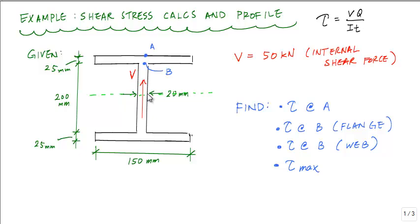In this video, we're going to do some detailed shear stress calculations and get a good feel for what the shear stress formula looks like and how it's applied for a given cross section. We've got an I-beam with an internal shear force of 50 kilonewtons, pointing upwards on the cross section. We want to calculate the shear stress at point A, the shear stress at point B just in the flange, the shear stress at point B just inside the web, and then the maximum shear stress.